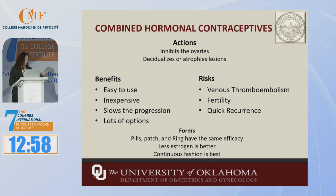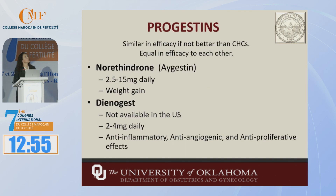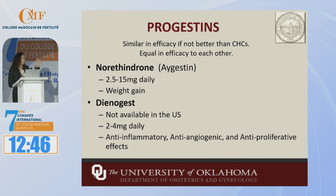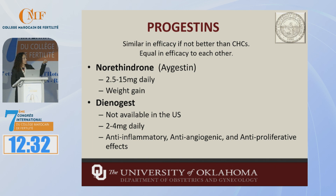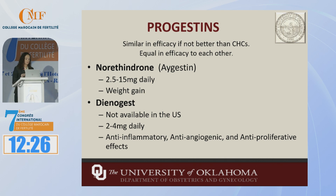Anyone with a contraindication to estrogen cannot use combined hormonal contraceptives. Next are the different progestins — there are lots of options. I really like norethindrone in the U.S., brand name Aygestin. Dienogest is not available in the U.S., but the research on it is excellent. These two progestins actually have similar efficacy to the combined hormonal contraceptives and can actually be considered first-line treatments.